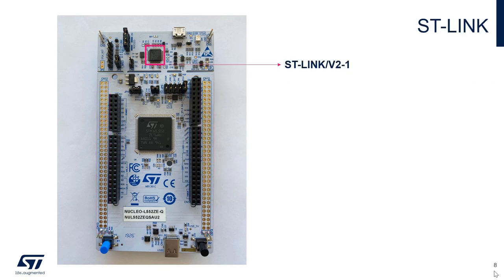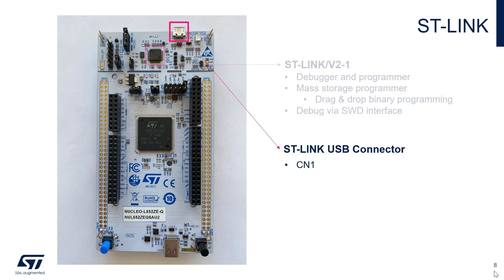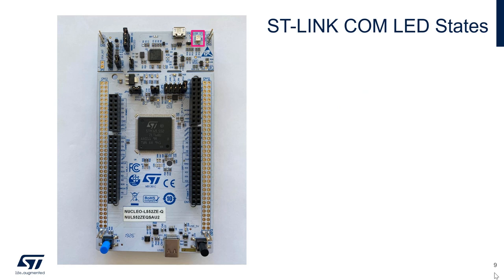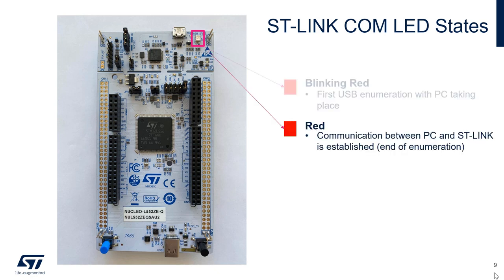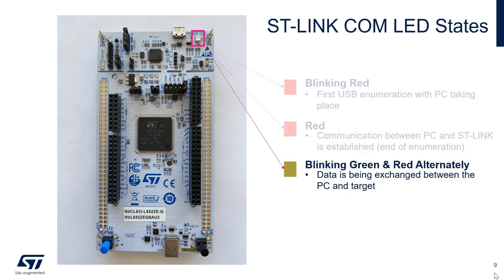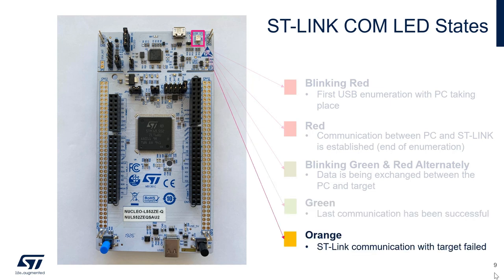The STM32 L5 Nucleo comes with an onboard STLink V2-1, which can function as a debugger or programmer. The STLink is a mass storage programmer, allowing for drag-and-drop binary programming, and supports debugging via the SWD interface. To access the STLink, plug in your USB to the STLink USB connector. The pattern and coloring of the STLink LED will tell you about the current connection status: blinking red means the first USB enumeration with the PC is taking place; solid red means communication between the PC and STLink has been established; blinking red and green alternately means data is being exchanged; solid green means the last communication was successful; and solid orange means the STLink's communication with the target has failed.